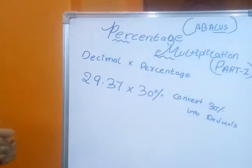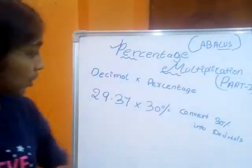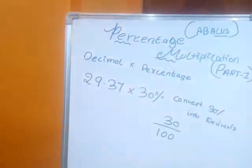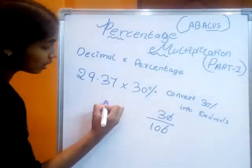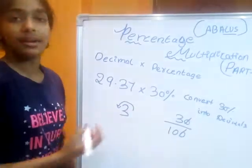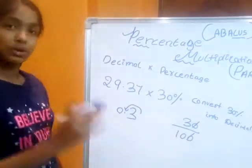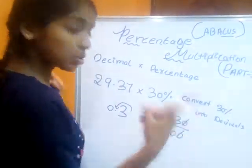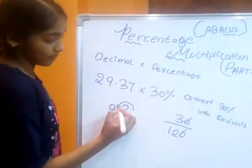Percentages go up to 100%, so we need to do 30 divided by 100. The answer is 3 by 10. So we take 3, and since it is divided by 10, from the starting point we take one step forward — so the decimal point gives us 0.3. Because there is only one zero, we take only one step.